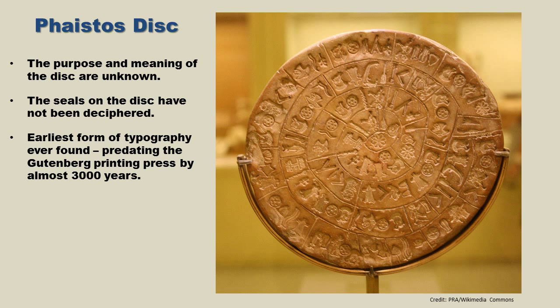The major archaeological find at Phaistos has been called the Phaistos Disc, which you can see right here. The purpose and meaning of this disc are unknown — it is one of the greatest archaeological mysteries in the ancient world. Nobody knows what it was used for, and the seals or symbols on it have not been deciphered. But one interesting tidbit: this is the earliest form of typography ever found. These letters or seals were pressed into soft clay using reusable characters, predating the Gutenberg printing press by almost 3,000 years. The key difference is this technology obviously didn't spread around the world the way the Gutenberg press did. Looking closer at the symbols, you can see a human head, a shield symbol, and what appears to be a horn.